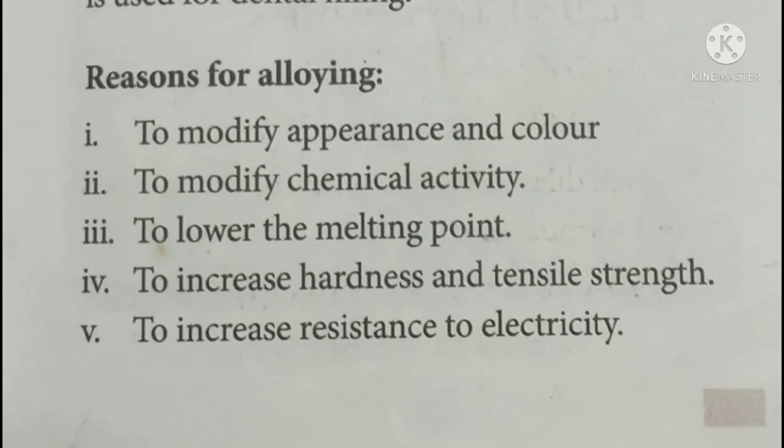Another reason is to increase the hardness — it gives more strength. When two or more metals are alloyed and fused together, it gives better strength. Then, to increase the resistance to electricity. We know that metals are good conductors of heat and electricity. By alloying, this property can be changed, and that is why we can increase their resistance — alloyed metals are resistant to electricity.